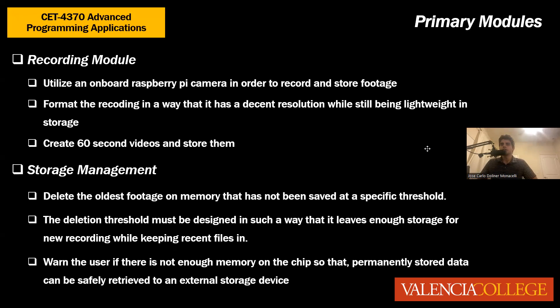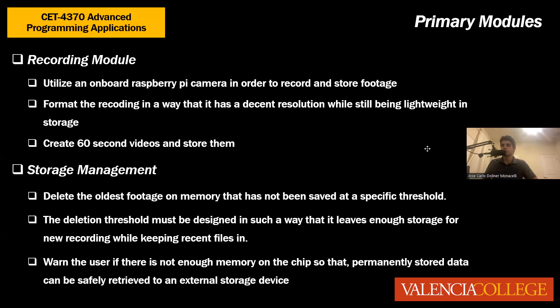A storage management system will also be devised. This system must be capable of deleting files when a certain threshold is met. As explained in the project report, this threshold is determined by taking the average recording size for each video taken on the road — since road videos are a bit larger than regular videos. Taking the average gives you a certain time you want recorded. For this project, that's chosen to be 5 hours, which leaves enough room for any occurrences. Any recordings older than 6 hours will be deleted by the system.